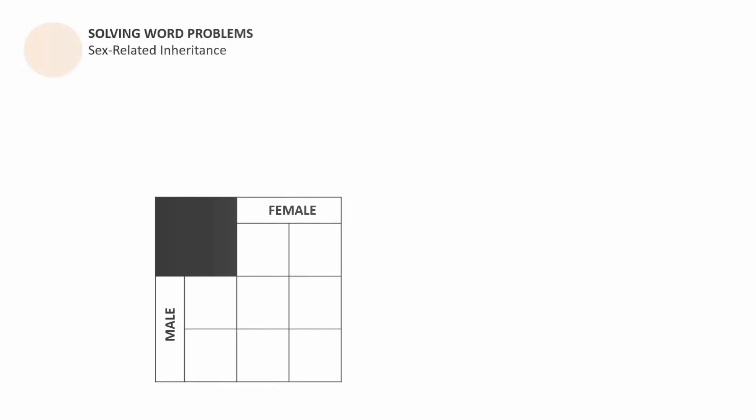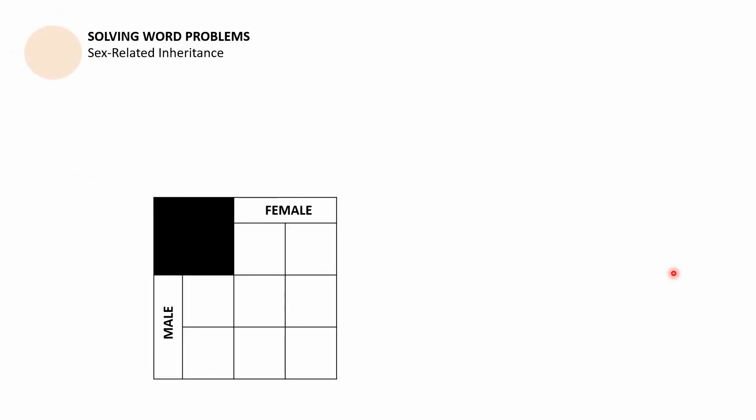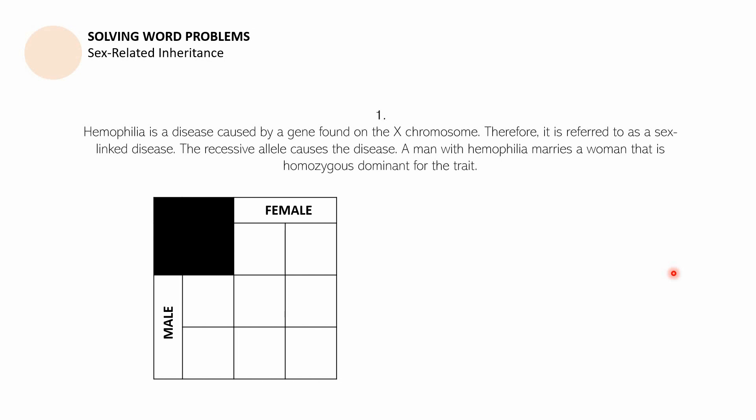That ends the second part of this presentation. Let us now deal with some word problems. You may grab a clean sheet of paper or get your science notebook and answer the following questions. Label it: solving word problems, sex-related inheritance.